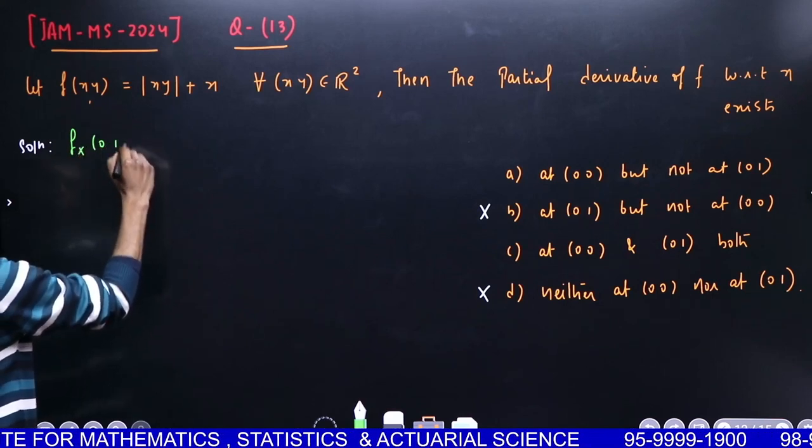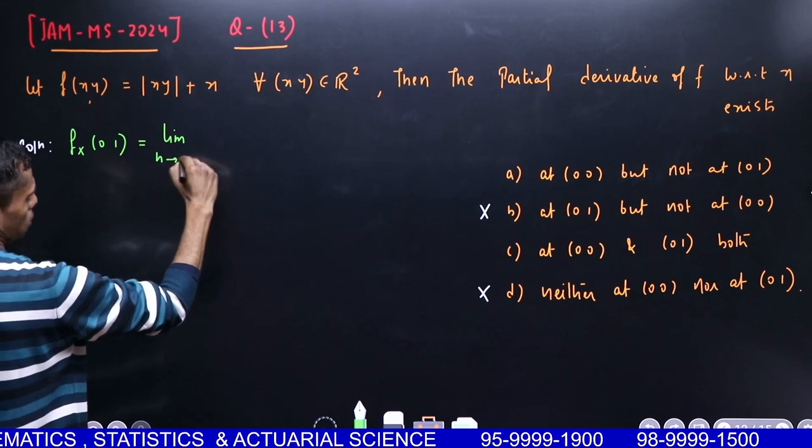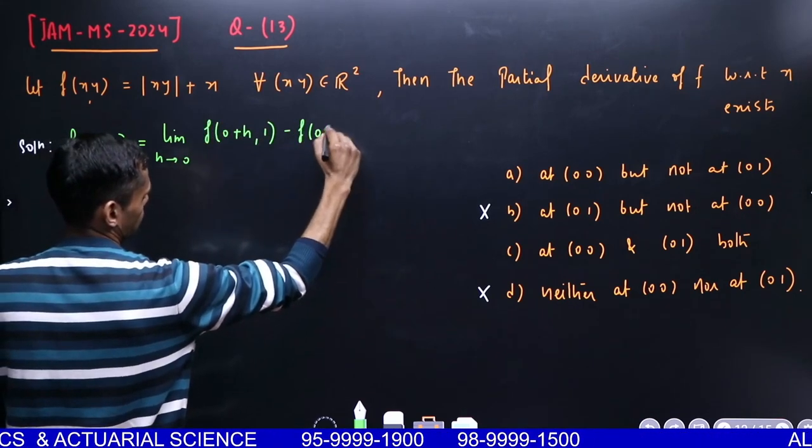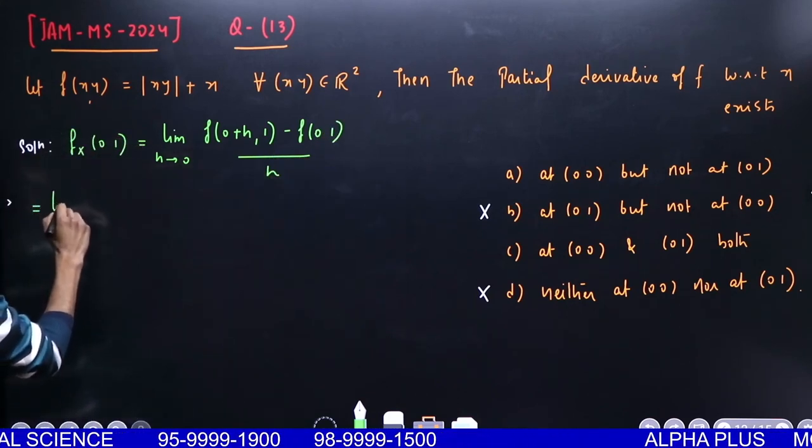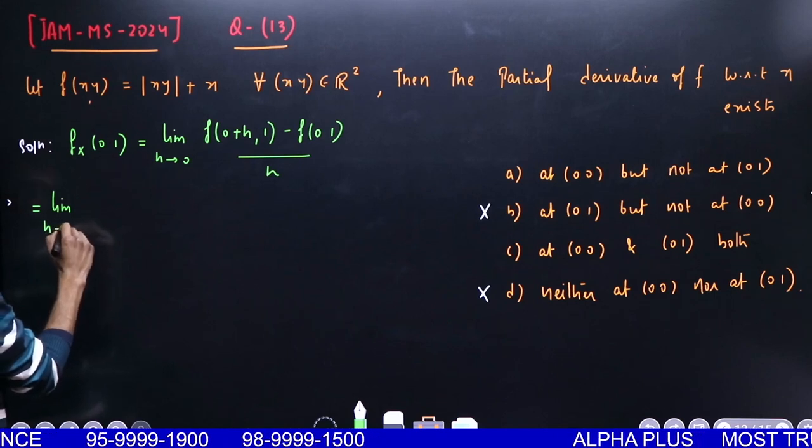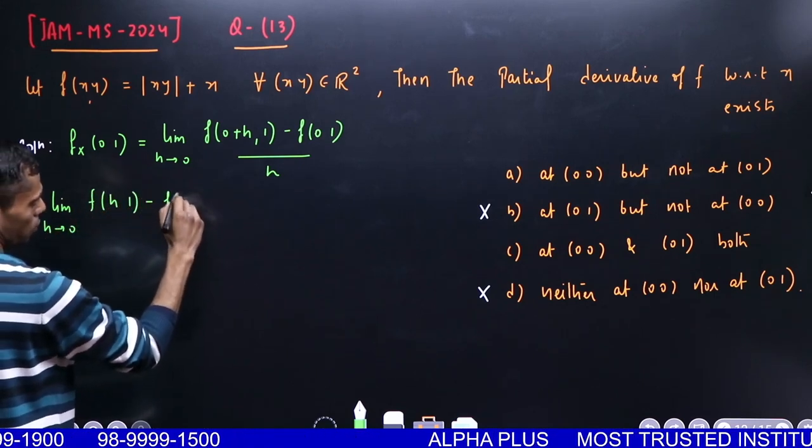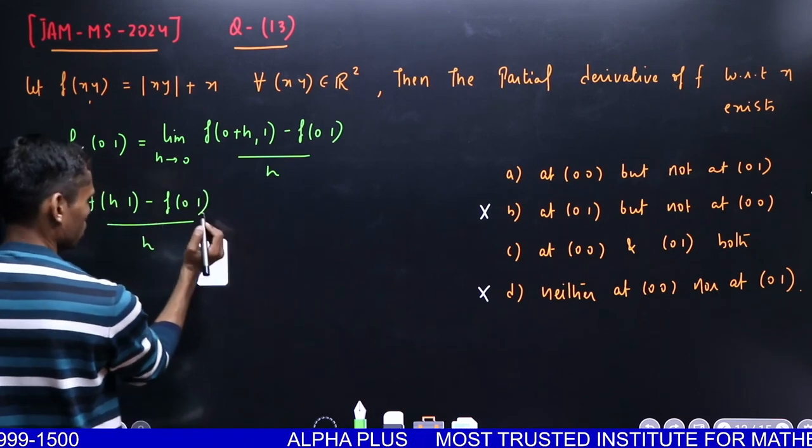This is clear. The answer has come. If this exists, then what's written here - that it doesn't exist at (0,0) - is wrong. Similarly, the other option is also wrong. Now let's check f_x at (0,1).